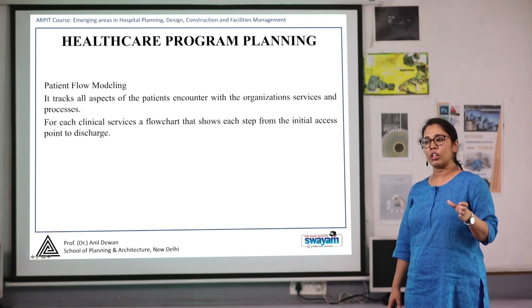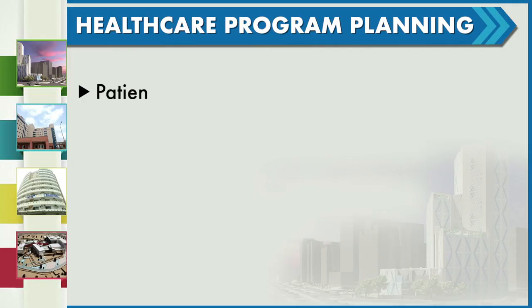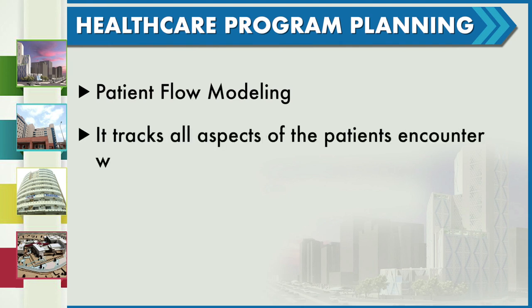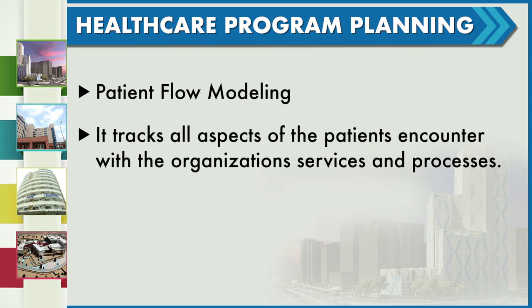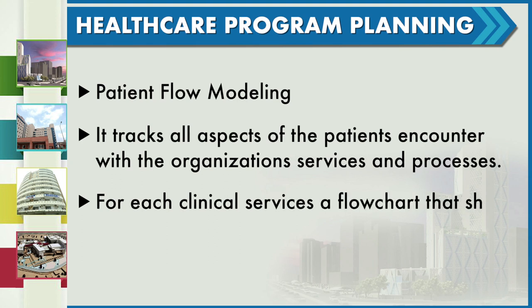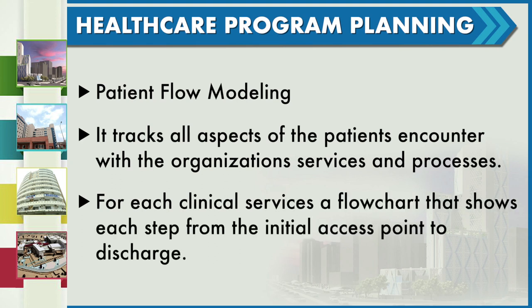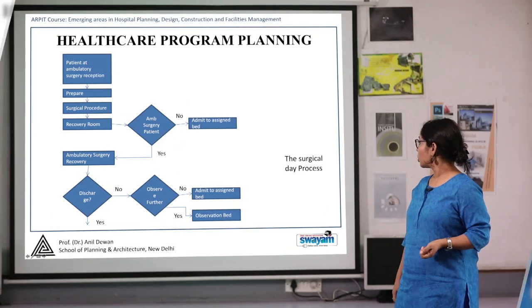A healthcare program plan helps us plan facility management for a particular healthcare system. It follows a patient flow modeling approach, which tracks all aspects of the patient's encounter with the organization's services and processes. For each clinical service, a flow chart is first created, and according to that flow chart, facility management is done at each and every intermediate level.